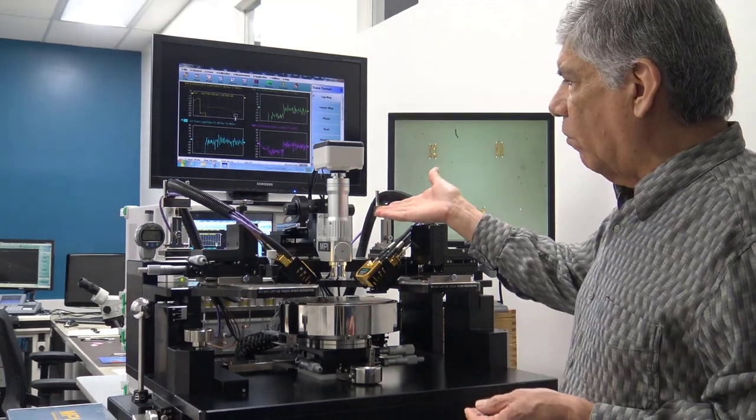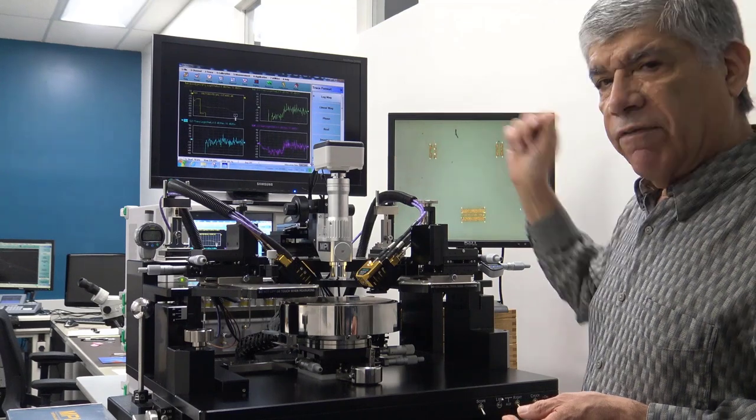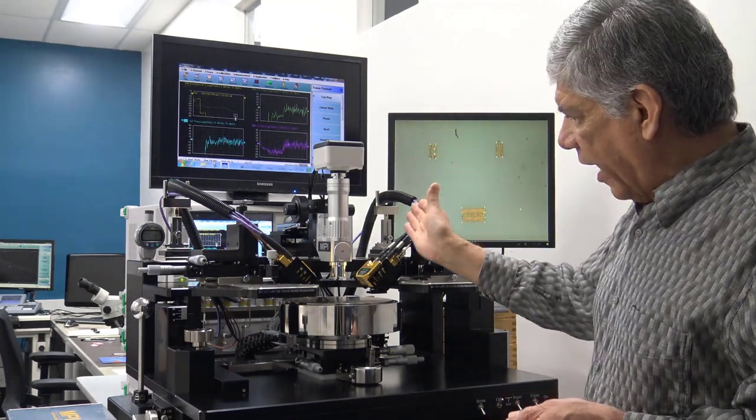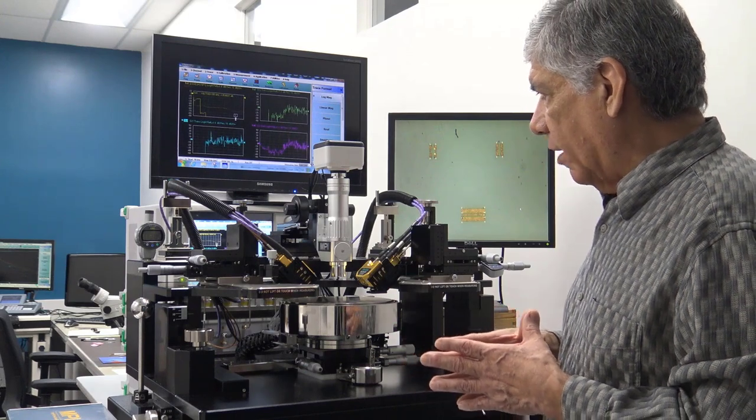The system is typically going to be set up behind the probe station. And normally you would want to elevate the test port of the VNA so that the cables have good access to where the modules are going to be mounted.